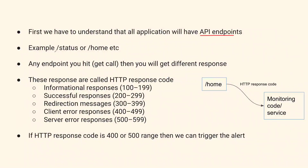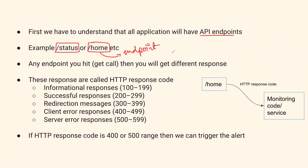What is an API endpoint? For example, you might have a slash-status endpoint or a slash-home endpoint. These endpoints perform certain tasks — they can display information or return some code. Regardless of what they do, when you make a GET call to an API, it will always send you an HTTP response code.